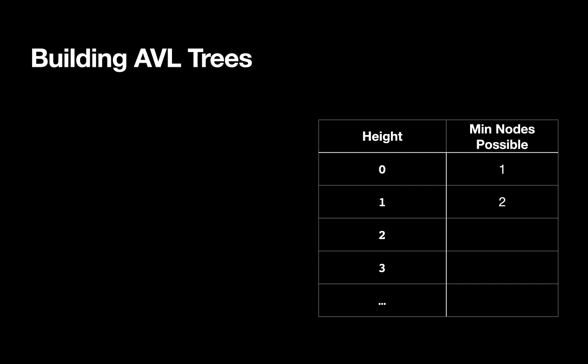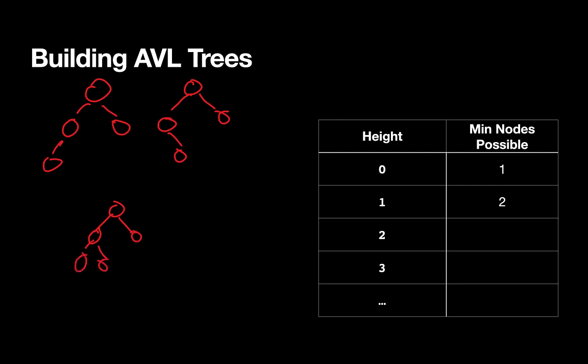When we get to a height of two, it gets a little bit more complicated. We could have something that looks like this, but we couldn't have just left-left because then we'd do a rebalance and have a height of one overall. We could also have something that looks like this, and then there are mirror images of both of those. So overall, we're going to have a minimum of at least four nodes. We're just trying to figure out the minimum number of nodes, and four is our answer.